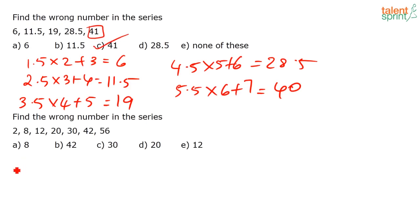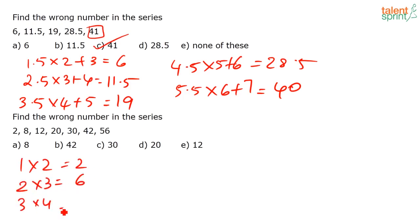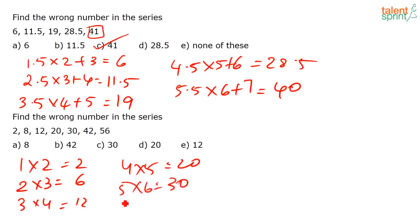Next wrong-number question. Series: 2, 6, 12, 20, 30, 42 but with 8 given instead of 6. Pattern: 1×2, 2×3, 3×4, 4×5, 5×6, 6×7 = 2, 6, 12, 20, 30, 42. The wrong number is the one given as 8 instead of 6 — answer is option A.